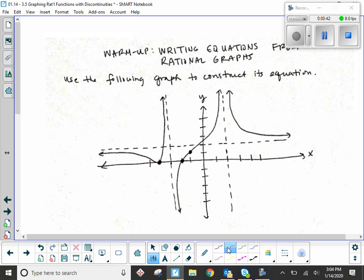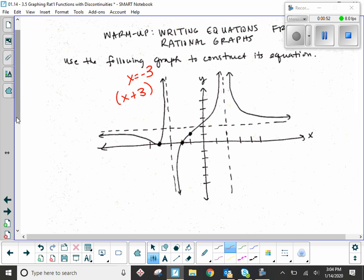So this asymptote on the left, that's at negative 3. The coordinating factored form is x plus 3. On either side of that asymptote, it's going away. Does away mean squared or not squared? Not squared. So there's our factor.